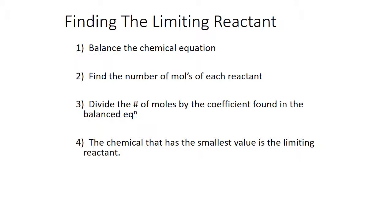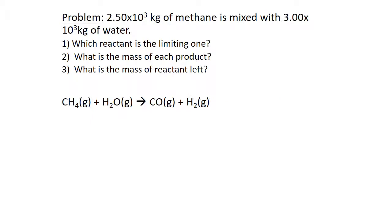Here is a problem: we have 2,500 kilograms of methane mixed with 3,000 kilograms of water. What reactant is limiting? What is the mass of each reactant? And what is the mass of the reactant left? I've given you an equation to start with. Going through the steps from the previous slide, can you answer questions 1, 2, and 3?